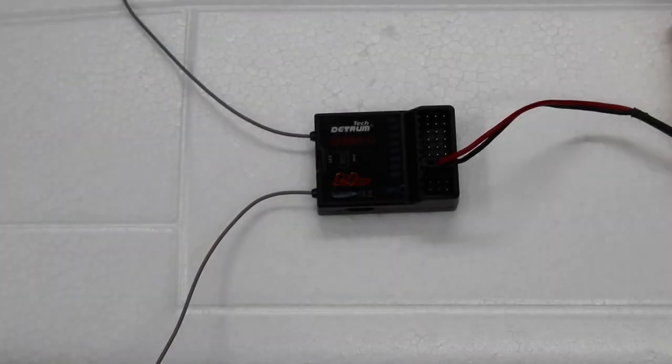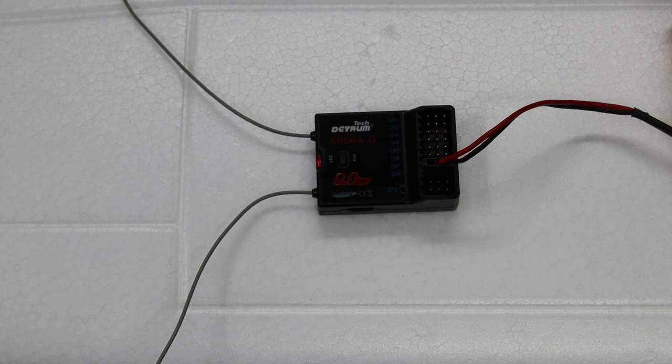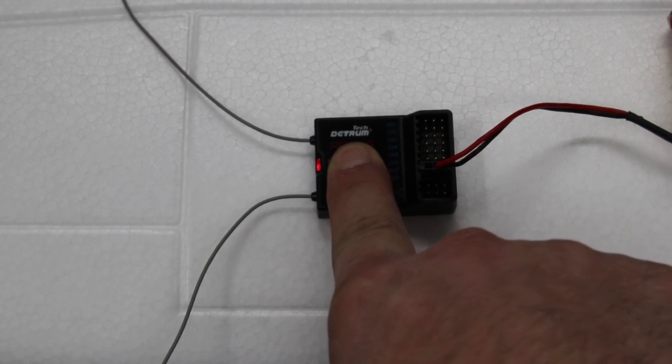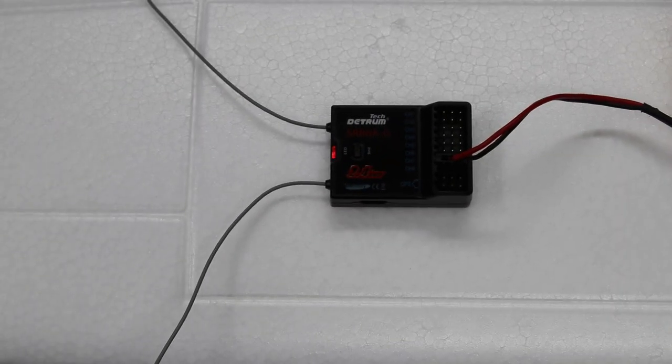Now I want to go over the binding procedure a little bit with you. All you have to do once you connect your power source is wait for that light to start flashing red fast. Once the light's flashing red, you're just going to go ahead, hold the bind button on top of the receiver here, wait for it to start flashing red slowly.